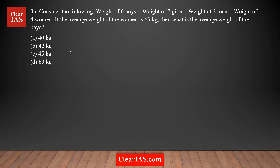Let's analyze question number 36. The weight of six boys equals the weight of seven girls, equals the weight of three men, equals the weight of four women. The average weight of a woman is 63 kilograms, and we need to find the average weight of the boys. We only need to use the condition that the weight of six boys equals the weight of four women — the information about seven girls and three men is irrelevant.